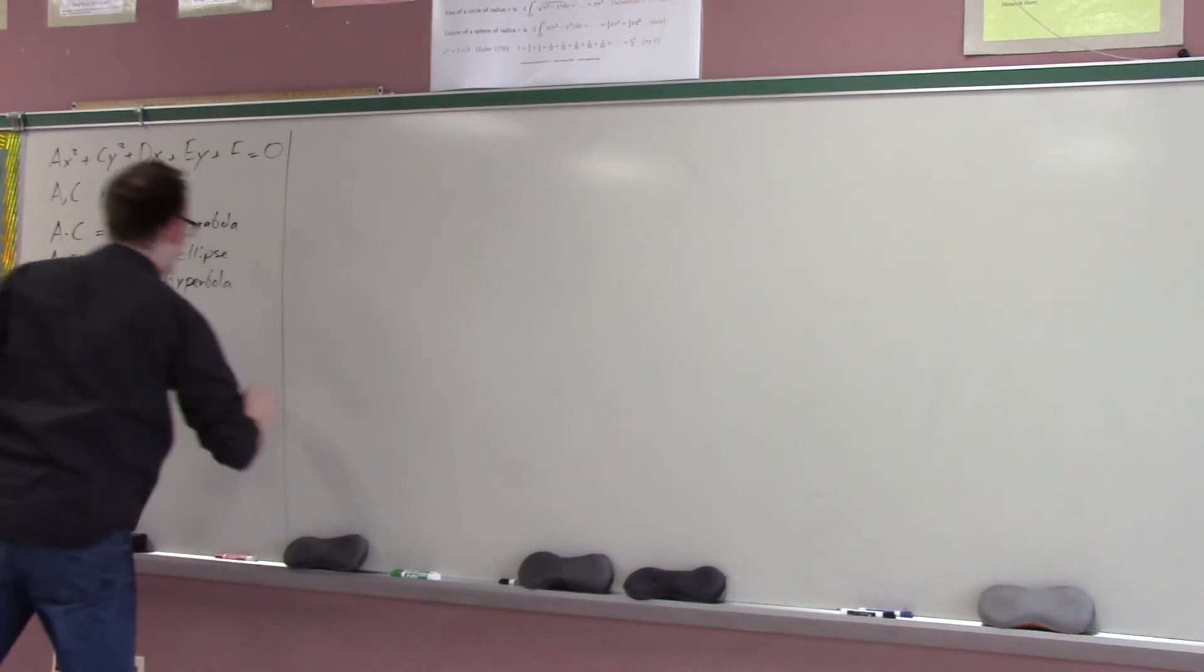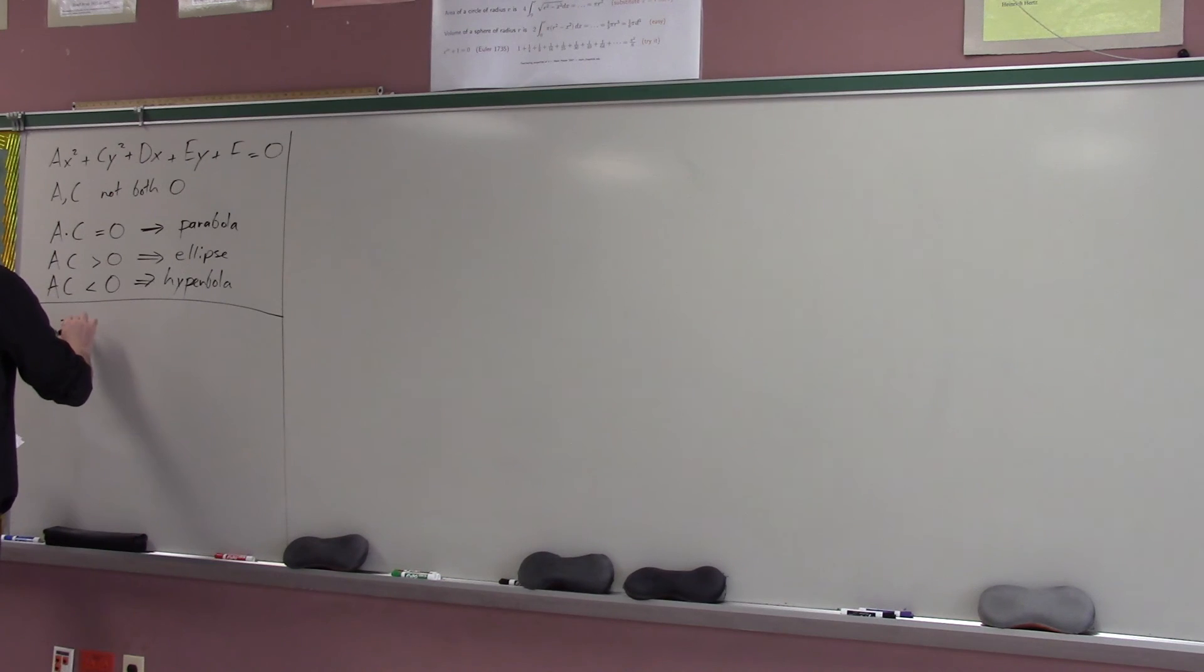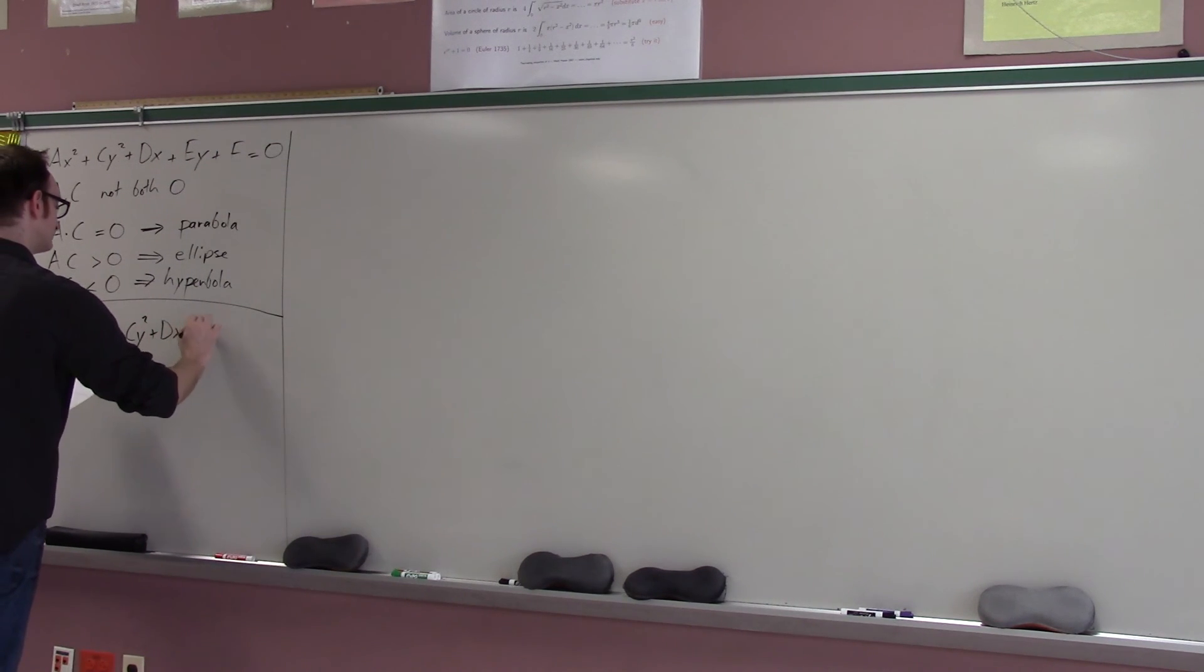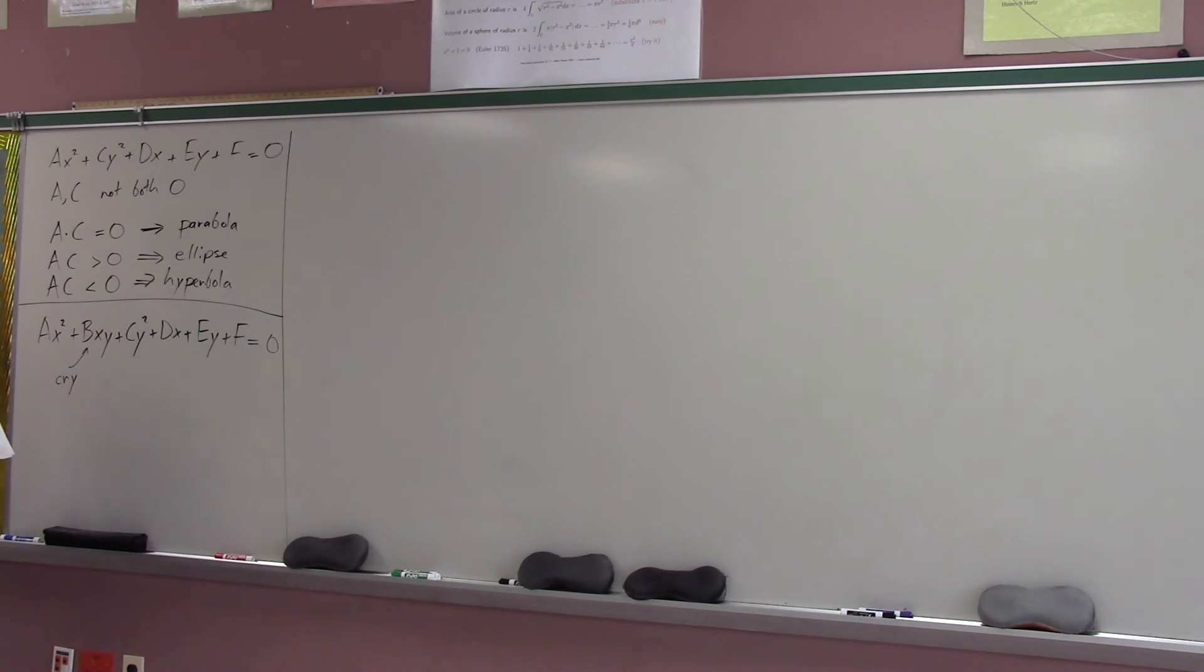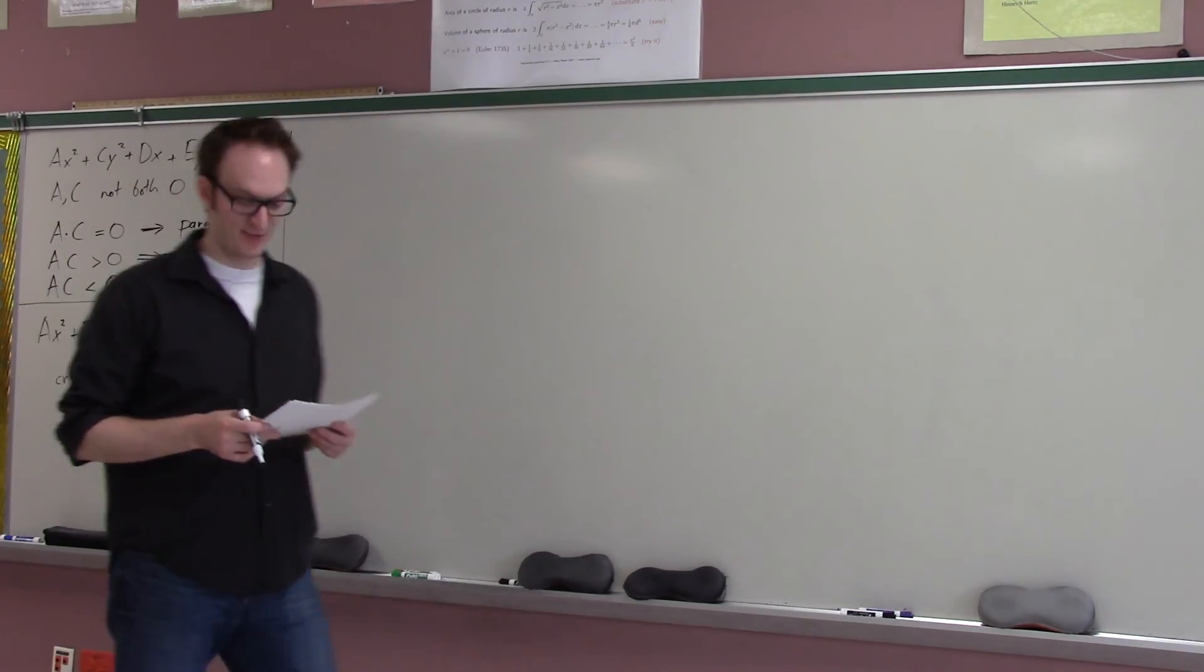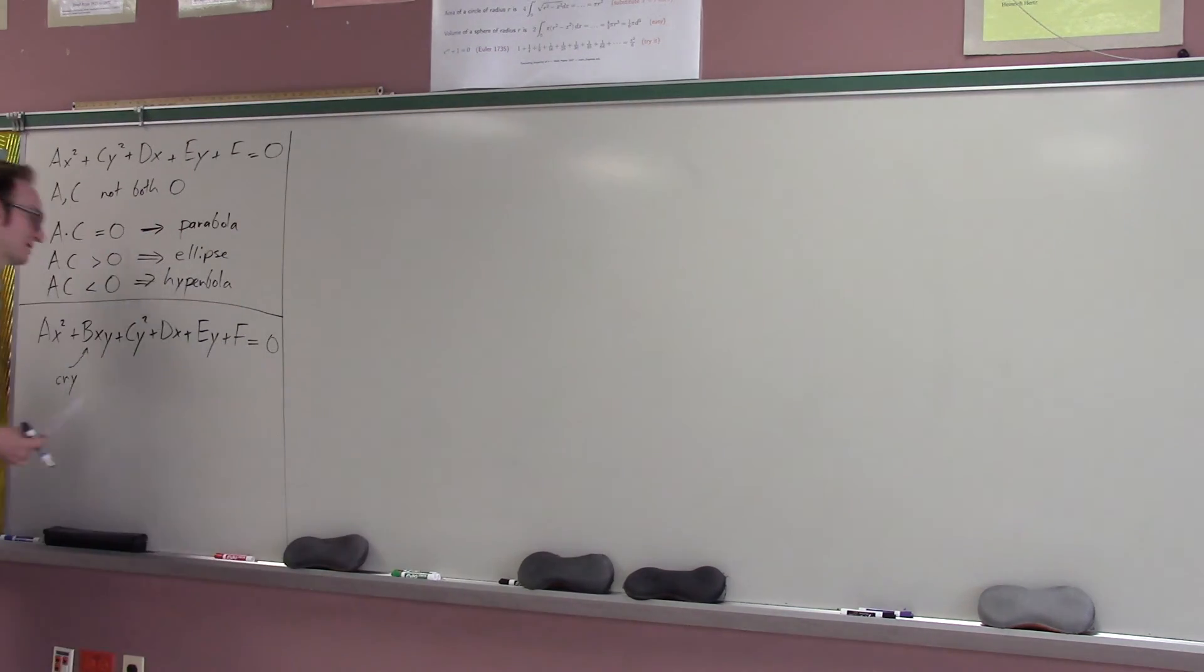So, that's because when there's a B, it's really terrible. So, now we're going to talk about what happens when there's a B. So, if you have Ax, so this is not the most general form of a second degree equation in two variables. The most general form includes a B term, which we have not previously seen. And, basically, when there's a B term, you cry. And, after you cry, then you do what we're going to do for the next two hours.